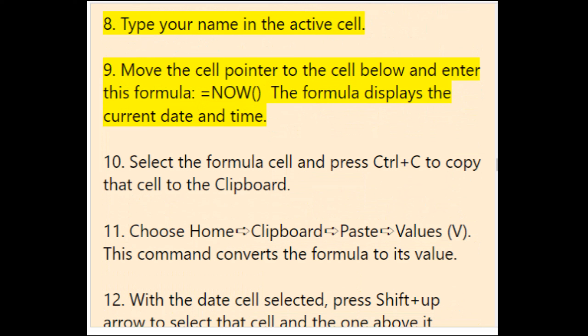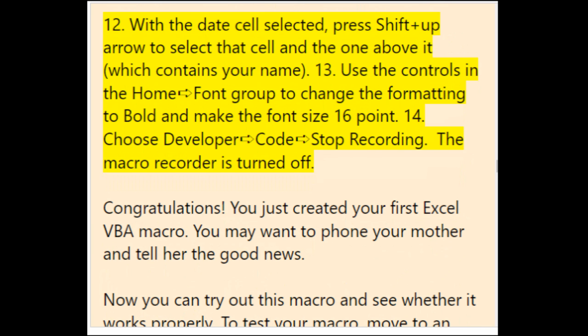Step 10: select the formula cell and press Ctrl+C to copy it to the clipboard. Step 11: choose Home > Clipboard > Paste Values (V) to convert the formula to its value. Step 12: with the date cell selected, press Shift+Up Arrow to select that cell and the one above containing your name. Step 13: use the controls in the Home > Font Group to change formatting to Bold and font size to 16 point. Step 14: choose Developer > Code > Stop Recording — the macro recorder is turned off.